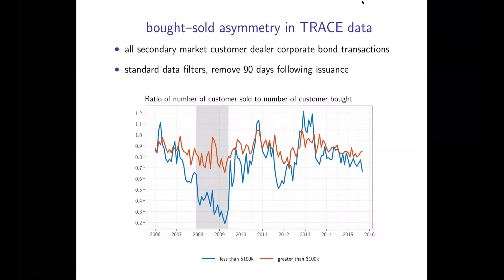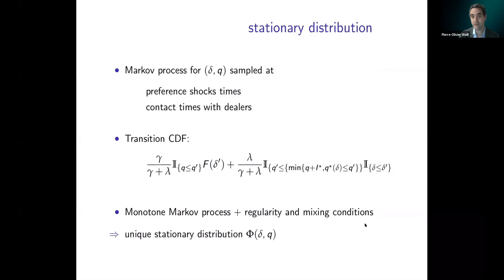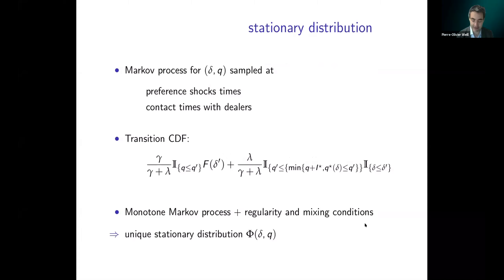A question about Sigma: is it the dealer's surplus or total gains from trade? Sigma is the marginal surplus of actual trade between a customer and a dealer — the difference between the marginal value of the customer and the inter-dealer price, representing the gains from trade between the dealer and customer.